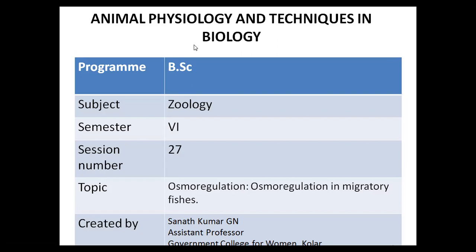They have to change from one basic osmoregulatory mechanism to another. For example, eels travel from freshwater to sea, and salmon travel from seawater to freshwater for breeding reasons. Here you can understand the fishes are going to face both hypertonic and hypotonic mediums, so they have to change their osmoregulatory mechanisms inside the body to get adjusted to the new place they are migrating.